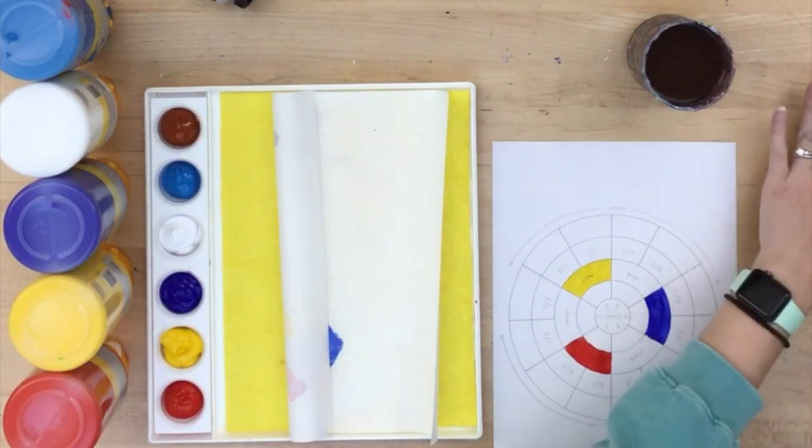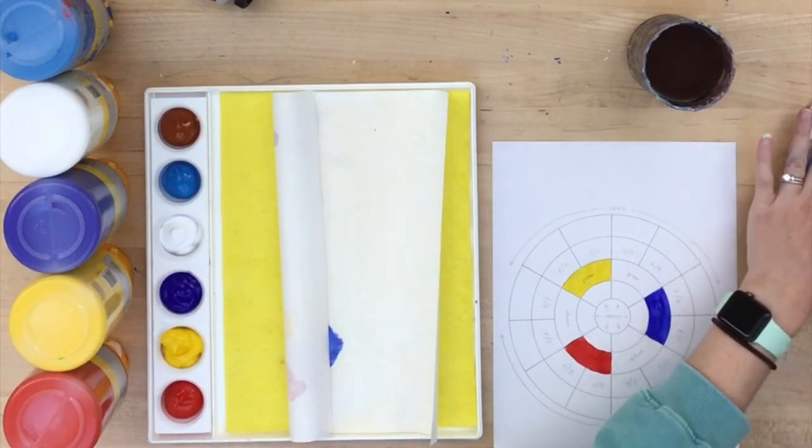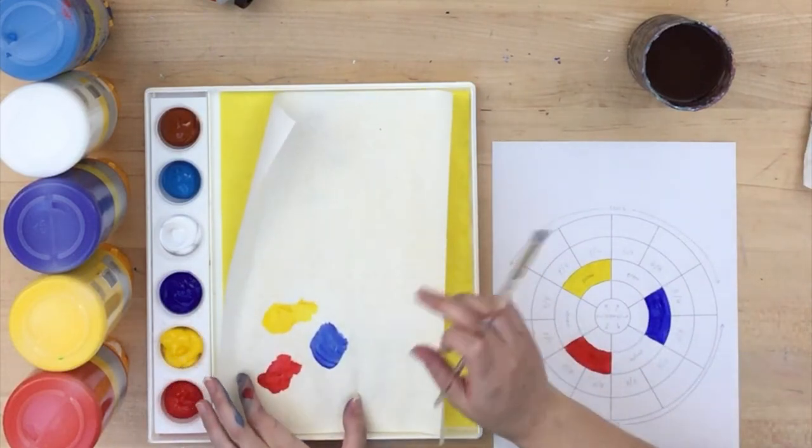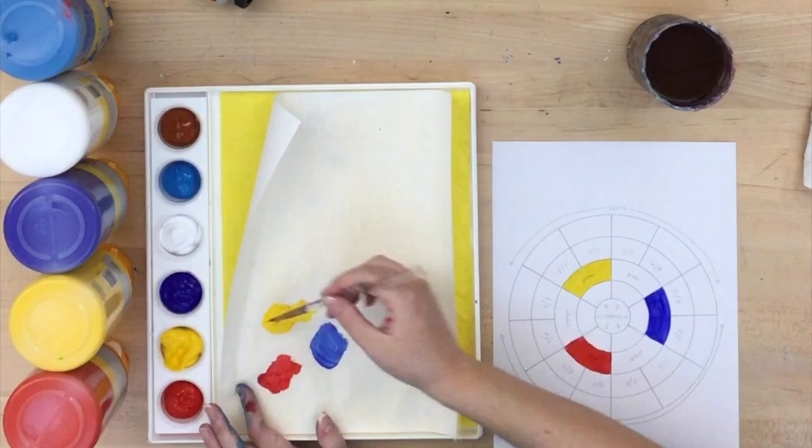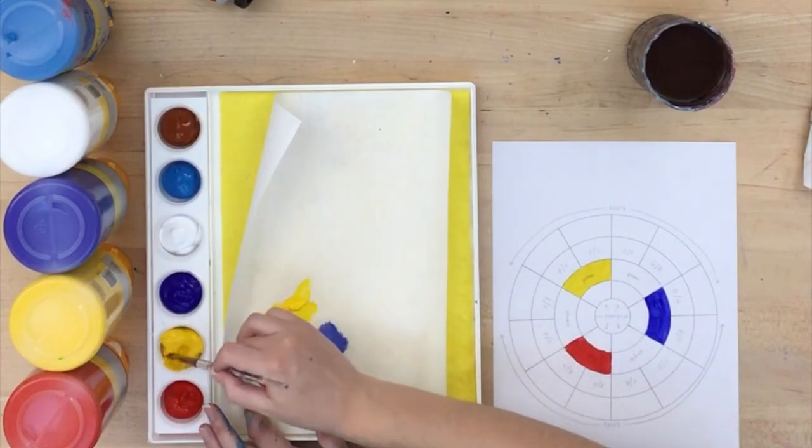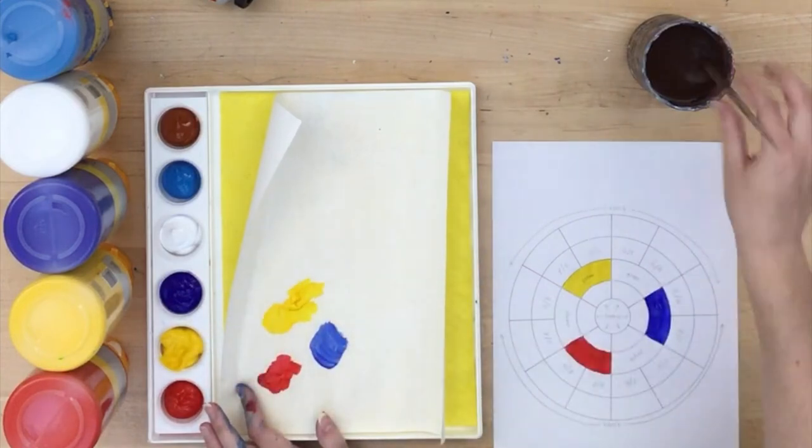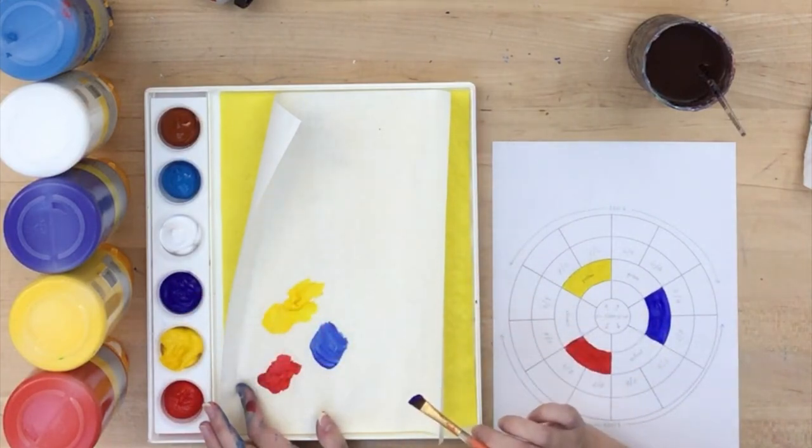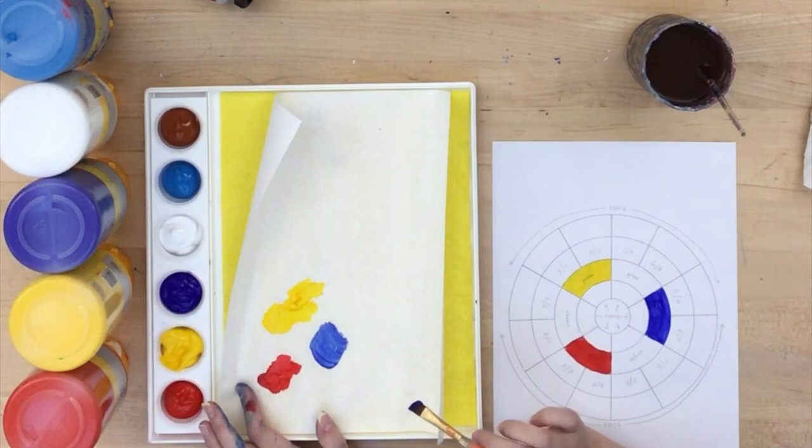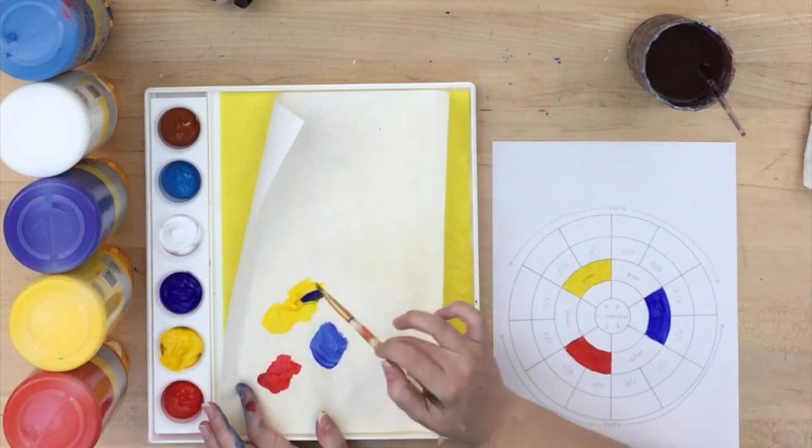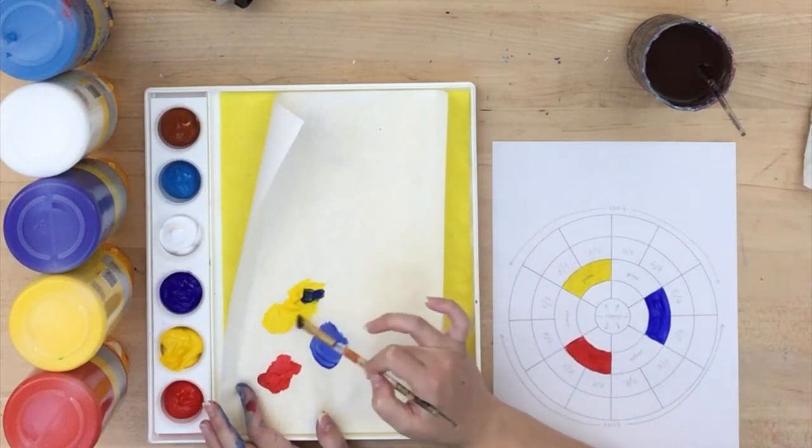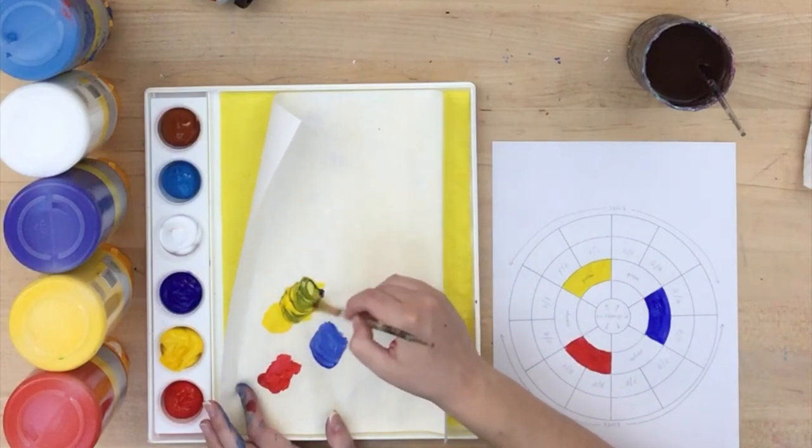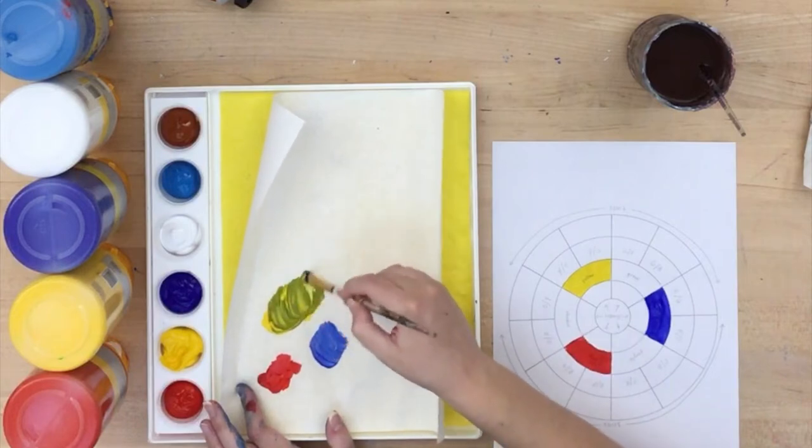I'm starting with green because it's the easiest of the secondaries to make. So I'm going to take some yellow. This is where you're probably going to want to use multiple brushes. I'm going to take some yellow. And then I'm going to use some blue. I want there to be more yellow than blue because blue is going to dominate the color mixing. So I have a significant amount of yellow, a little bit of blue. I'm going to mix it together and see what it looks like.